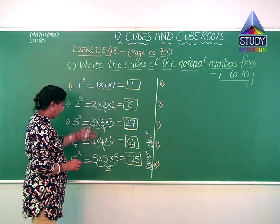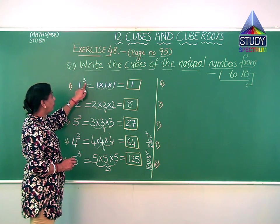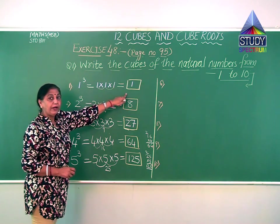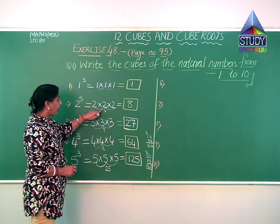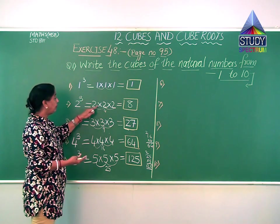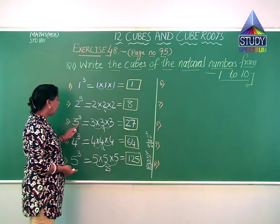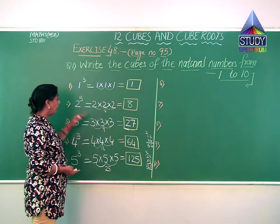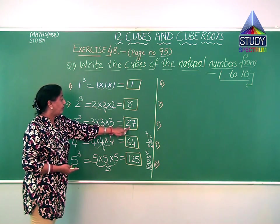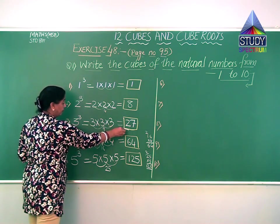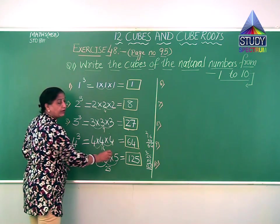Now we have solved the first 5 natural numbers. 1 cube is 1; 2 cube — write 2 raise to 3, multiply 2 three times — that is 8; 3 cube is 27; 4 cube is 64; 5 cube is 125.